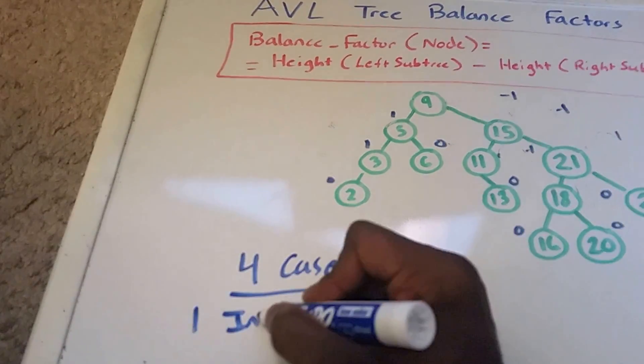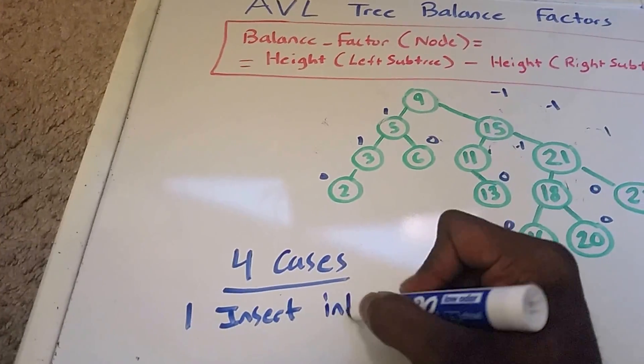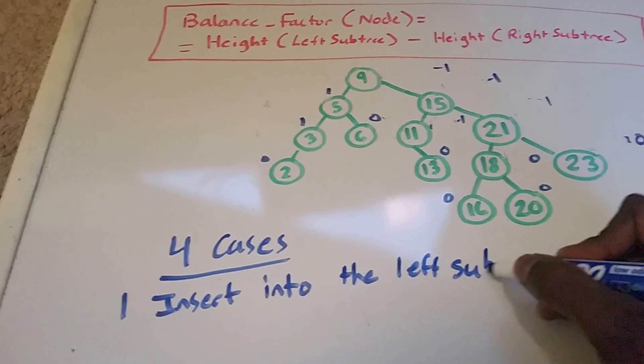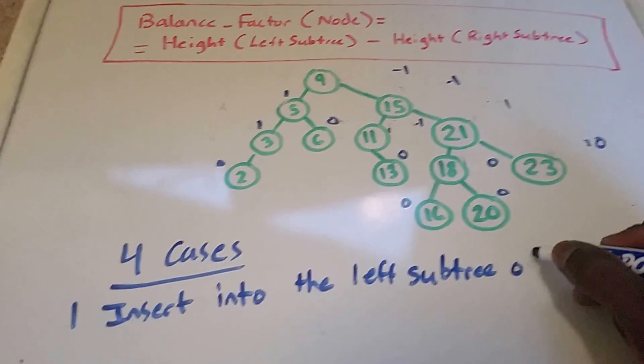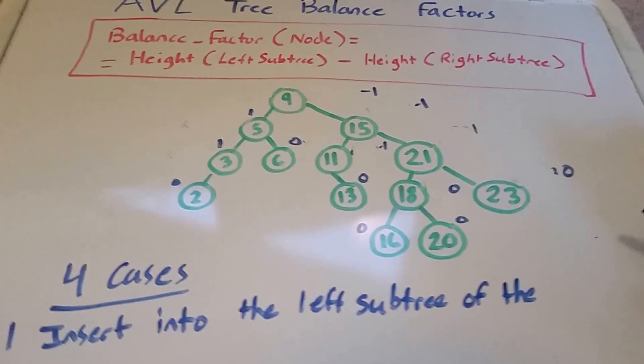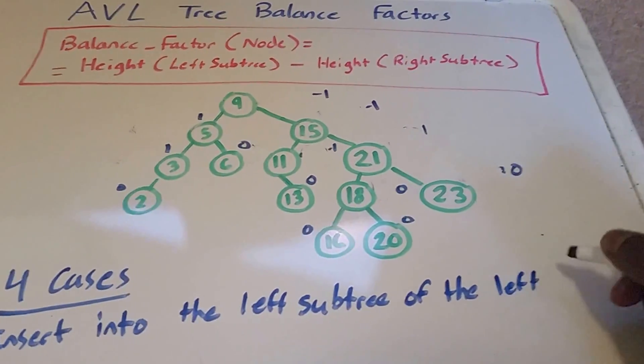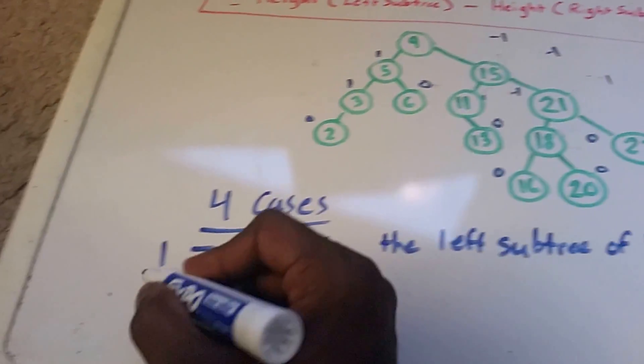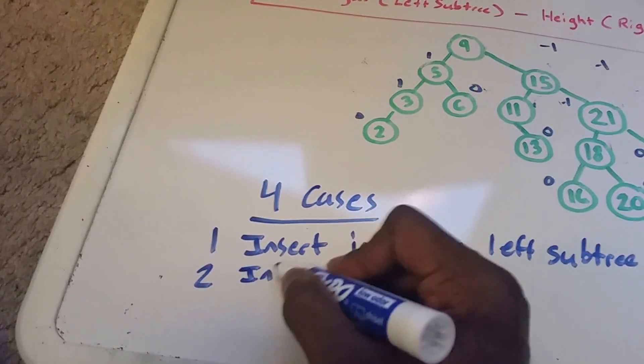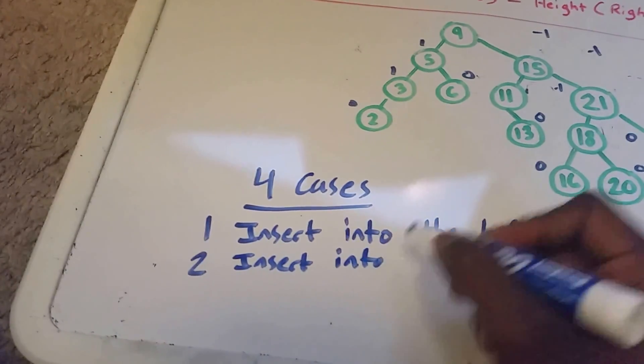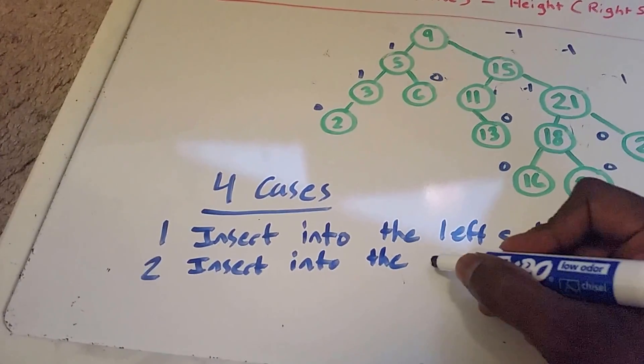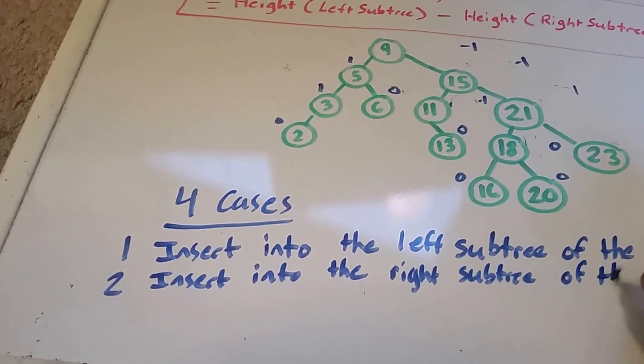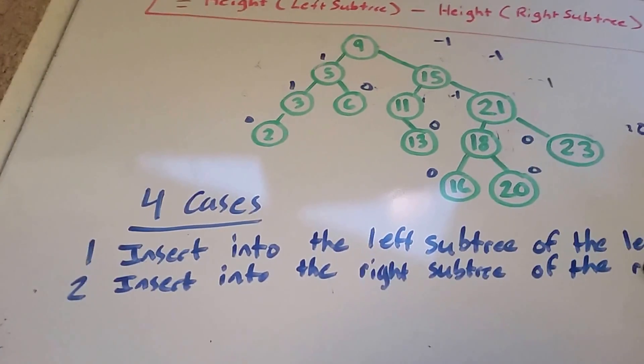The first case is if you insert into the left subtree of the left child of the node. I'm not gonna write that, it's like I'm gonna run out of space. 2. You insert into the right subtree of the right child.